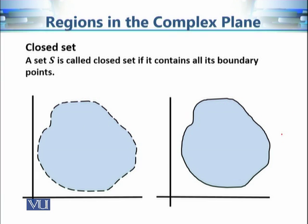We can say informally that a set is open if the boundary is not included. If the boundary is included we call the set a closed set. Precisely, a set is closed if it contains all its boundary points. Recall that a point is a boundary point if it is neither an interior point nor an exterior point. In S1, the boundary points are not included in S1, so S1 is not closed.